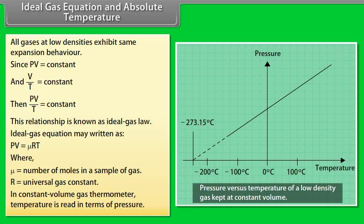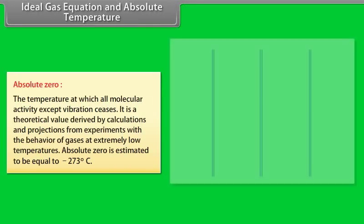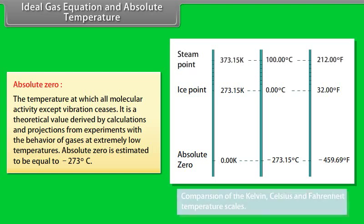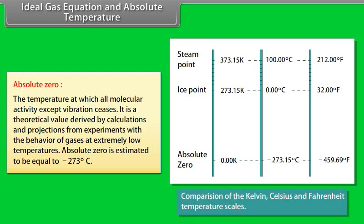In a constant volume gas thermometer, temperature is read in terms of pressure. The temperature at which all molecular activity except vibration ceases is known as absolute zero. It is a theoretical value derived by calculations and projections from experiments with gases at extremely low temperatures. Absolute zero is estimated to be equal to minus 273 degrees Celsius.